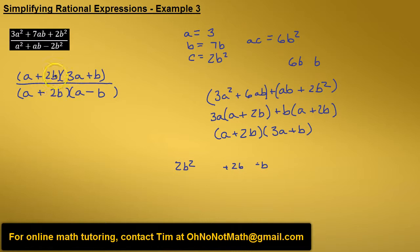So now let's look at this and see what we can cancel. We have a plus 2b in the numerator and a plus 2b in the denominator, so both of those cancel and we're left with 3a plus b in the numerator and a minus b in the denominator. That is our final simplified form.